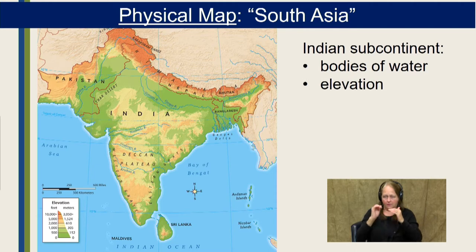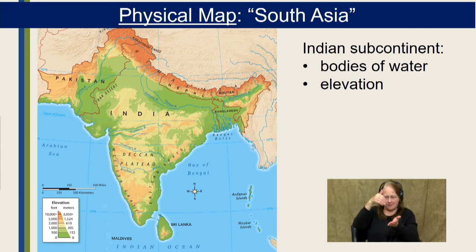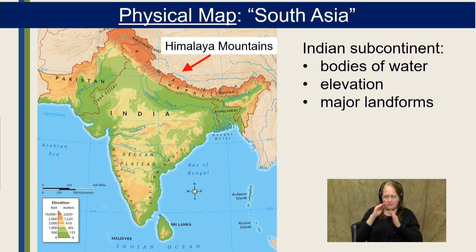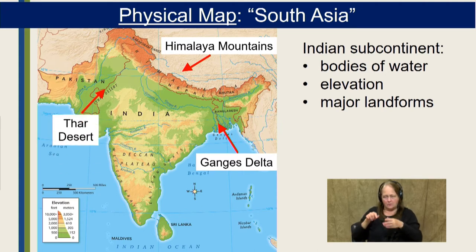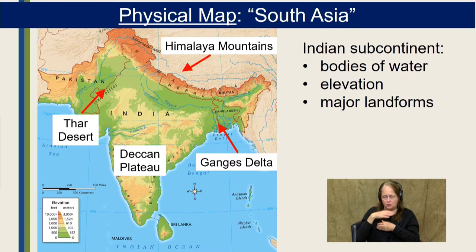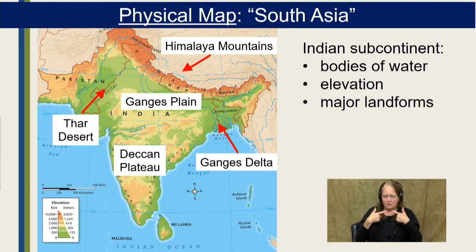Looking at elevation, green is at sea level, and the red color represents 10,000 feet or above — that's where the Himalaya Mountains are, the highest mountain range in the world. We also have an area of low-lying land called the Ganges Delta, a very fertile area where the Ganges and other rivers meet. There's also the Thar Desert on the border between India and Pakistan, and the Deccan Plateau — relatively flat land at high elevations. Most of the people live in the Ganges Plain, an area of fertile land for growing crops along the Ganges River.